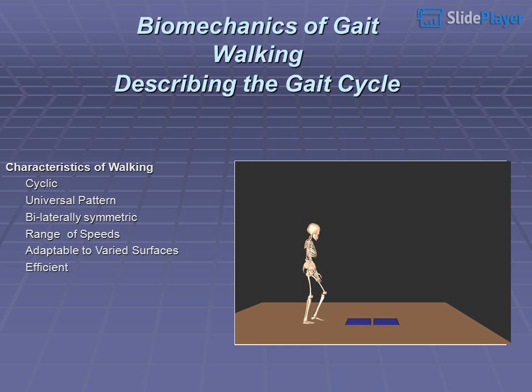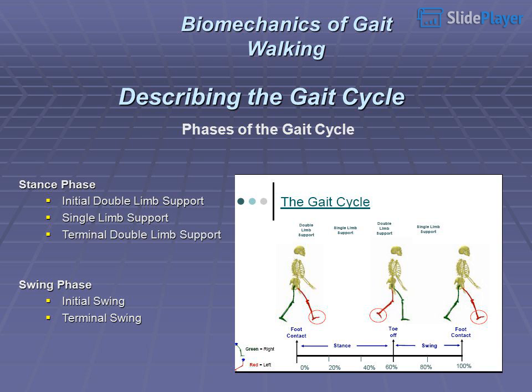Describing the gait cycle. Characteristics of walking: it is cyclic, a universal pattern, bilaterally symmetric, adaptable across a range of speeds, adaptable to varied surfaces, and efficient.